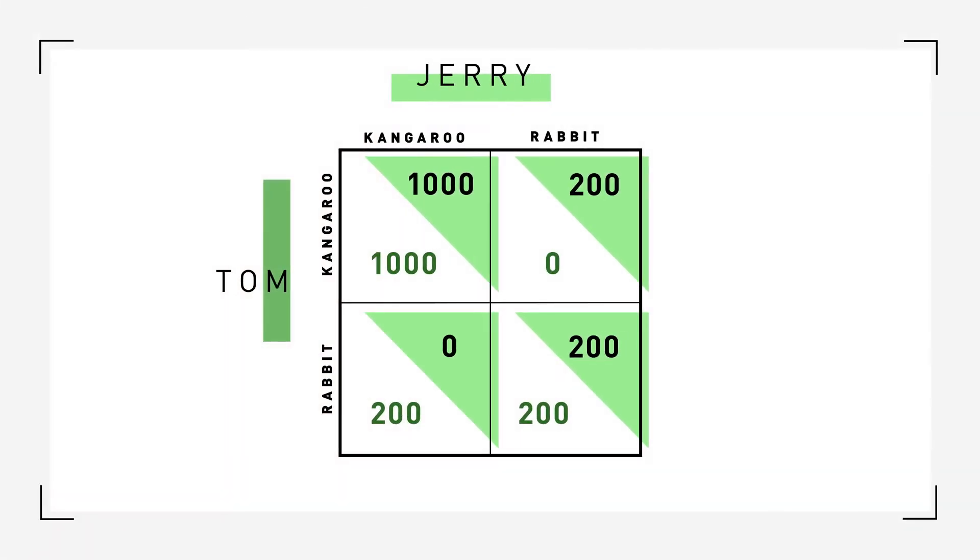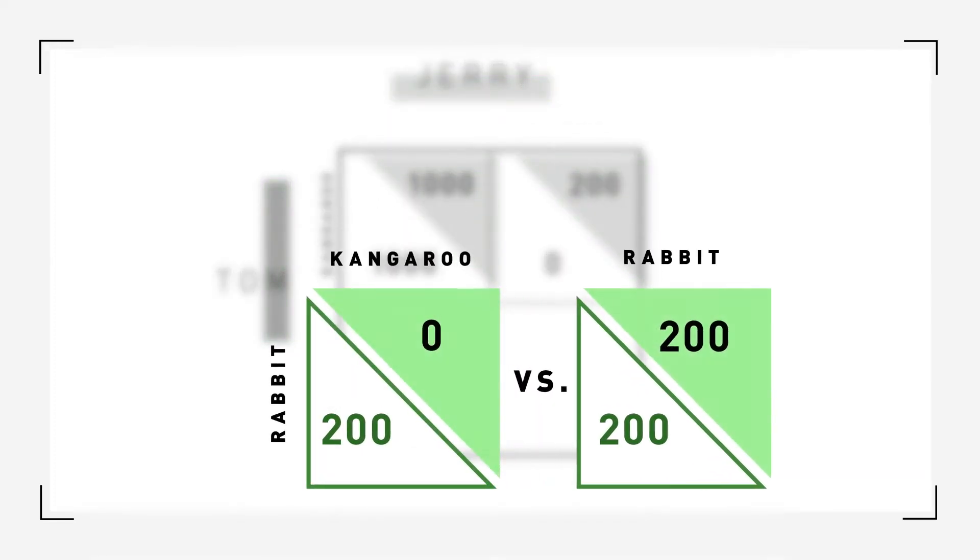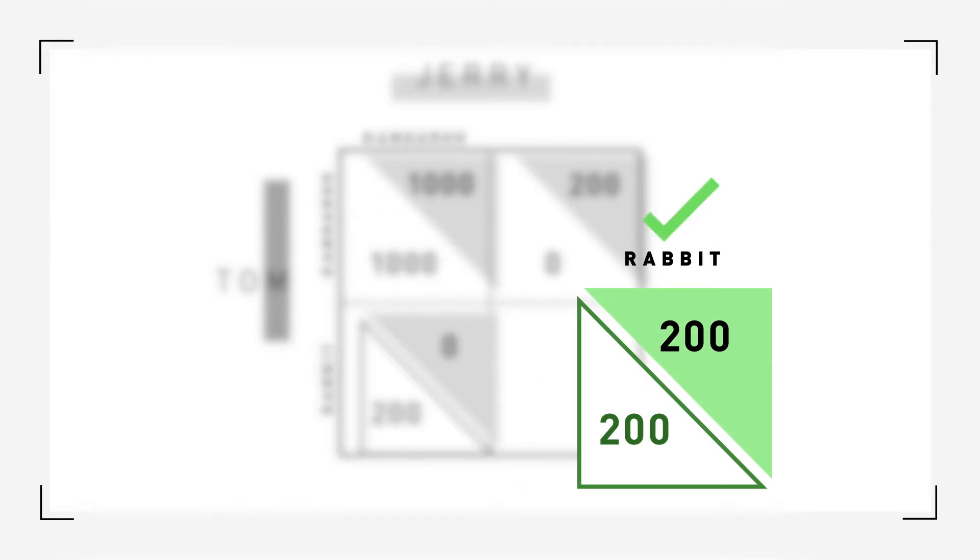If Tom stuck to the rabbit and Jerry went after the kangaroo, Jerry would go hungry and vice versa. Notice why the two other squares are not equilibria. If, hypothetically, Tom has selected rabbit, Jerry would clearly not select kangaroo since by changing his choice to rabbit he'd be better off. Likewise, if Jerry has selected rabbit, Tom would never select kangaroo since it would mean he'd go hungry for the night, given the stipulation that kangaroo can only be caught by two people hunting cooperatively.